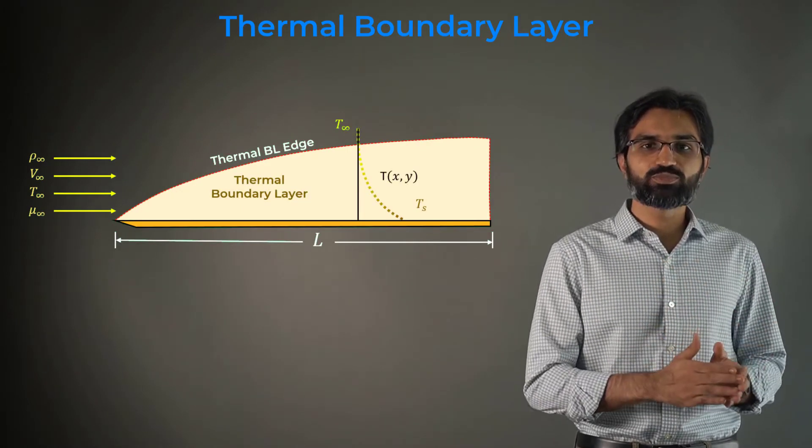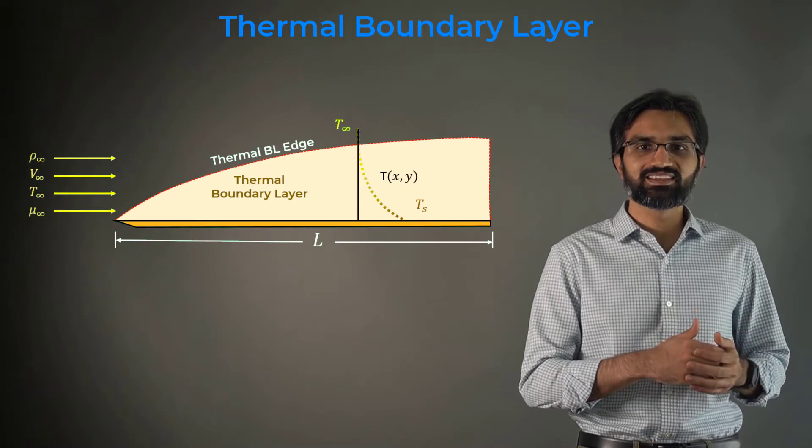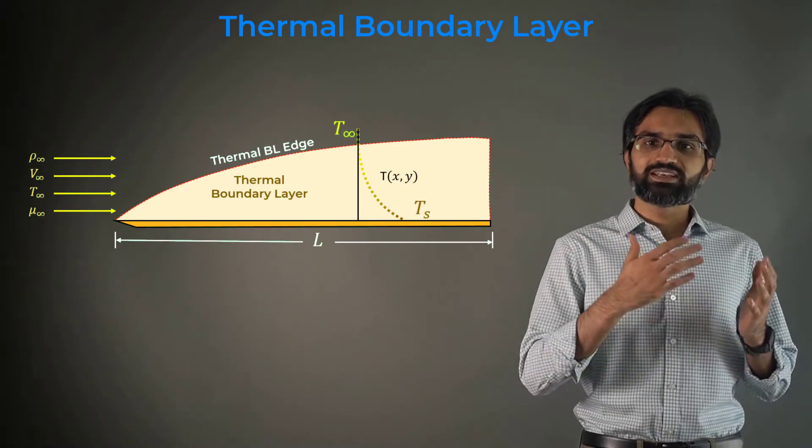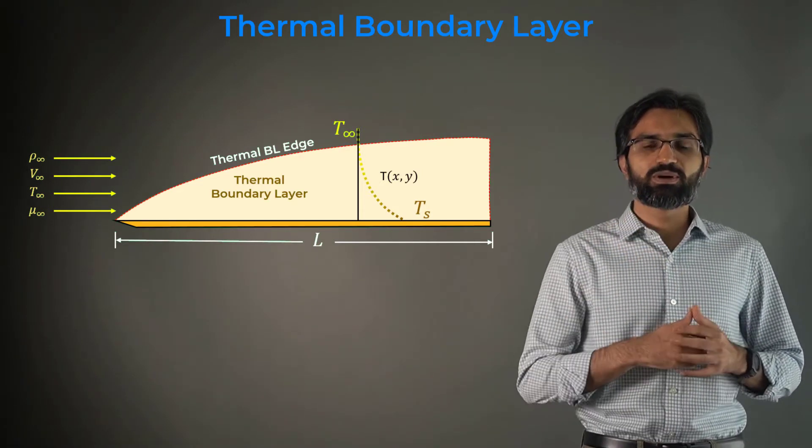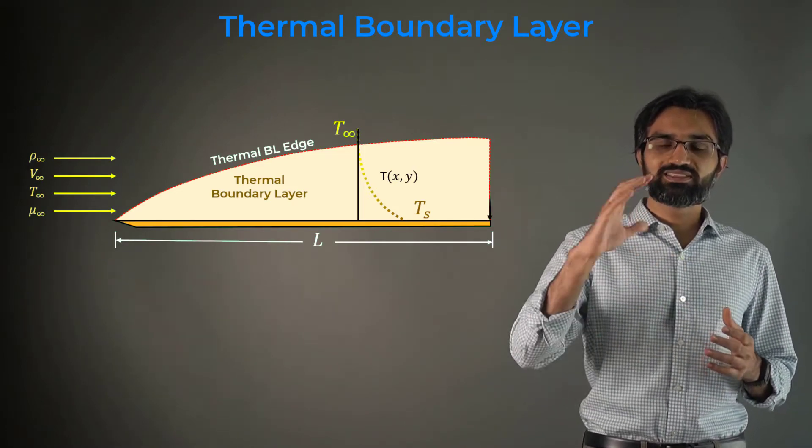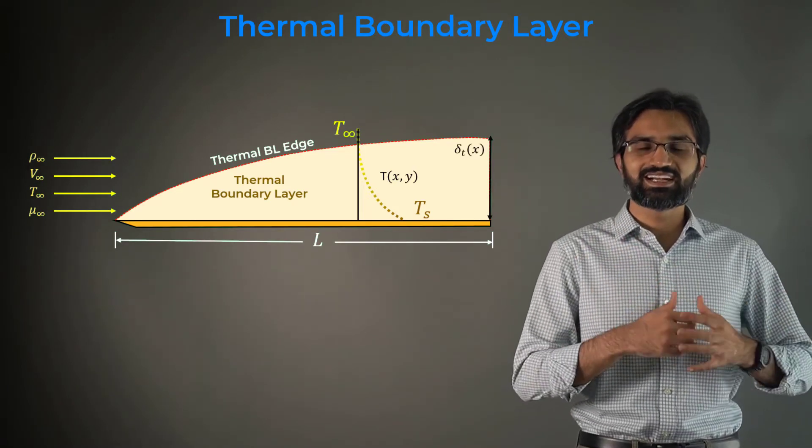the fluid temperature varies between the wall temperature Ts and the free stream temperature T infinity at the edge of the boundary layer, and the thermal boundary layer thickness is given by delta T.